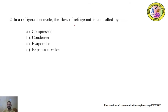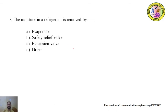Second question: in a refrigeration cycle, the flow of refrigerant is controlled by — options are: compressor, condenser, evaporator, expansion valve. Answer: expansion valve. Third question: the moisture in the refrigerant is removed by — options are: evaporator, safety relief valve, expansion valve, dryers. Answer: dryers.